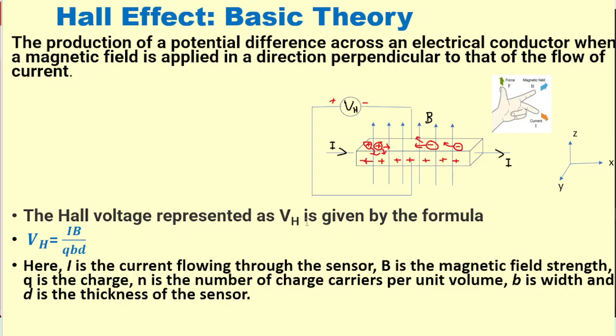Hall voltage depends on the current I, the magnetic field B, and the sample dimensions b and d, where b is the width of the sample and d is the thickness of the sample. So we can measure the Hall voltage.